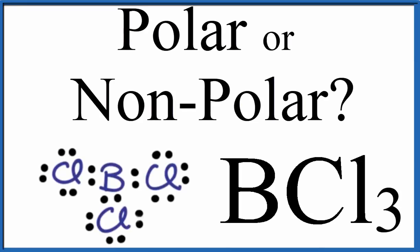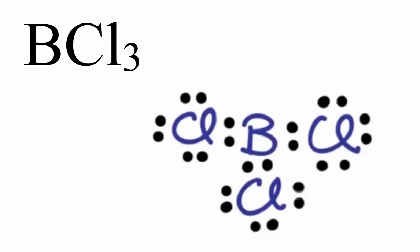To determine if BCl3 is polar or nonpolar, we'll start with the Lewis structure. This describes the distribution of valence electrons around the molecule and can help us determine polarity. Here's the Lewis structure for BCl3.